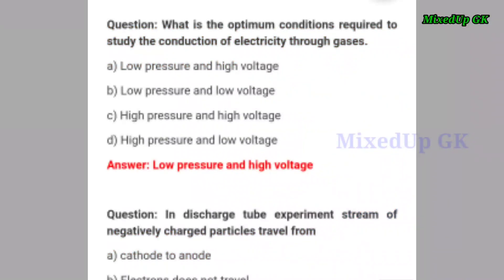Next question: what are the optimum conditions required to study the conduction of electricity through gases? Option A: low pressure and high voltage. Option B: low pressure and low voltage. Option C: high pressure and high voltage. Option D: high pressure and low voltage. The correct answer is option A — low pressure and high voltage.